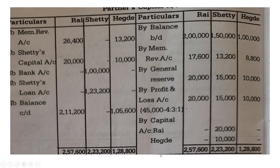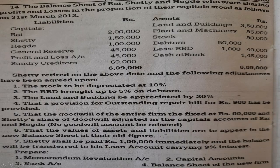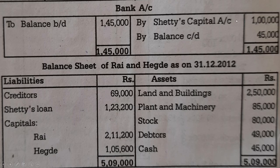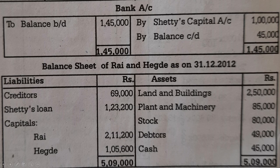Shetty's total capital account credit side comes to Rs. 2,23,200. Posted towards debit side Rs. 2,23,200 — Rs. 1,00,000 paid immediately, remaining Rs. 1,23,200 transferred to Shetty's loan account. For Rai and Egde, the credit side totals Rs. 2,57,600 and Rs. 1,28,800 respectively, with balance carried down Rs. 2,11,200 and Rs. 1,05,600. Bank account: balance brought down Rs. 4,50,000 plus Rs. 1,45,000; by Shetty's capital account Rs. 1,00,000 paid; balance Rs. 45,000.